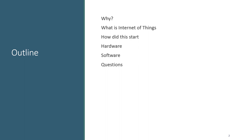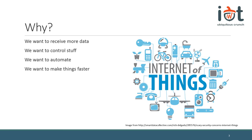First of all, we will talk about why there is a need and why people like the Internet of Things. Then we're going to talk about what the Internet of Things represents. We're going to see a little bit of the history of Internet of Things. Also, we're going to talk about the hardware and the software which is used to implement the Internet of Things. Afterwards, if you have any questions, you can ask. Please stop me if you don't understand something — just raise your hand.